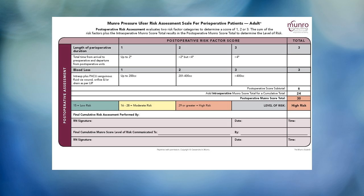Here is the postoperative phase. When performing a risk assessment, we should not use an estimated or scheduled time of surgery, but the actual time of surgery plus the preoperative and postoperative time, because the duration of pressure is what causes the decrease in blood flow to tissue and eventual necrosis. The structure of this postoperative subscale is the same as the other two. Enter the postoperative evaluation scores in the total column, and when you have your postoperative subscore subtotal, that will be added to the intraoperative Munro score total for a cumulative total, which is the finalized Munro Scale risk level.